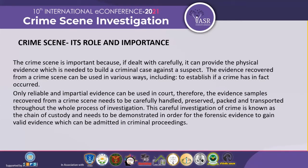The importance of the crime scene is that if it is dealt with carefully, it may provide physical evidences which are absolutely necessary to build a case against a suspect. Every evidence recovered from the crime scene can be used in various ways to establish if a crime has in fact occurred or not. Only reliable, impartial evidence can be used in court. Therefore, evidence samples recovered from a crime scene need to be carefully handled, preserved, packed, and transported throughout the whole process of investigation. This careful and systematic process is known as the chain of custody, which needs to be demonstrated in order to make forensic evidence admissible before the court of law.